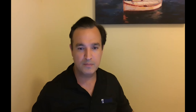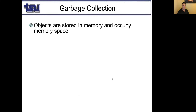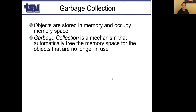Whenever the Java Virtual Machine is available, that object will be removed from the memory. This is for COM310 Java programming class. The topic is garbage collection. When you create an object in Java, it will occupy memory space. Garbage collection is a mechanism that can free the memory space for objects that are no longer in use.